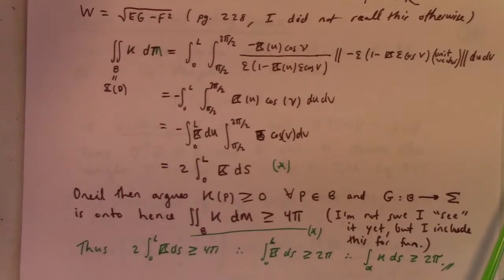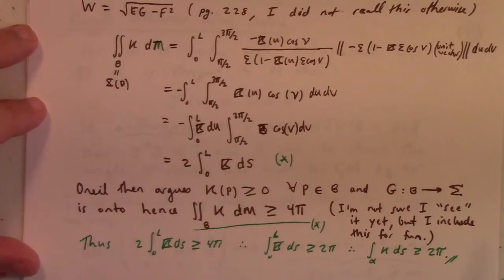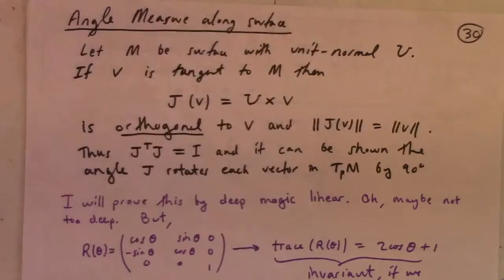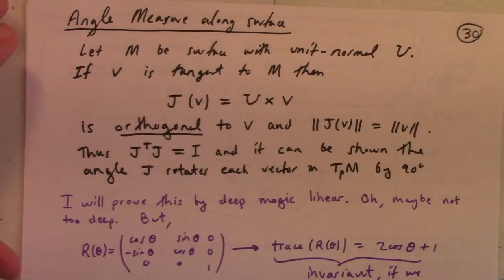And then O'Neill argues that the Gaussian curvature K is greater than or equal to 0, and the Gauss map, right, is onto. Therefore, the integral of the Gaussian curvature over the surface, over the tube, is greater than or equal to 4π, because if it's onto, it has to at least hit the whole sphere once, right, and there you have it. This is greater than or equal to 4π divided by 2, and there's the theorem. Alright.